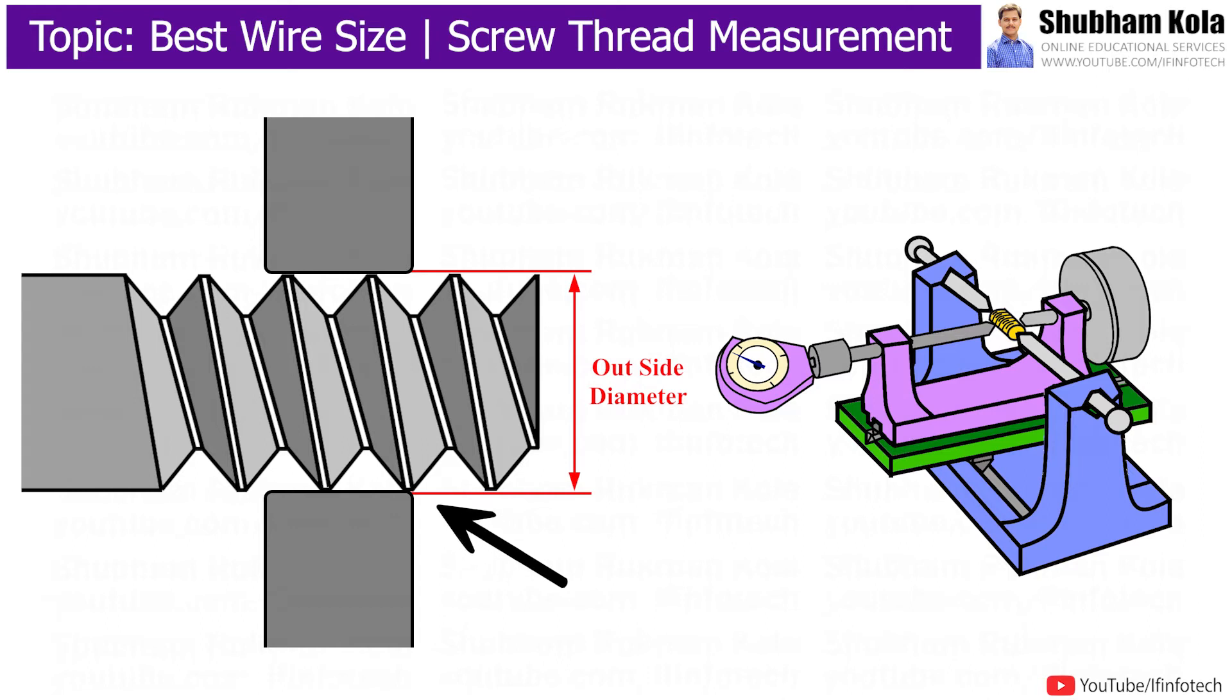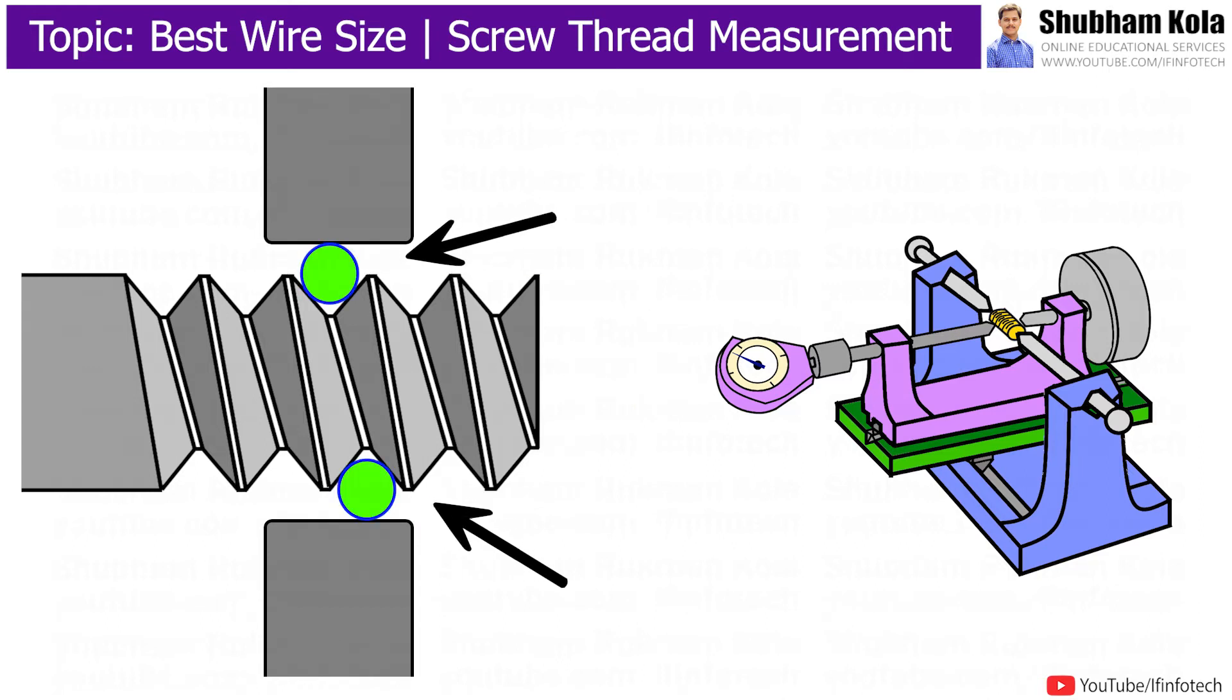To avoid this, we insert wires of circular cross-section in the V-groove of thread workpiece, and then the anvils are attached. Due to these wires, the chances of errors in reading is reduced.